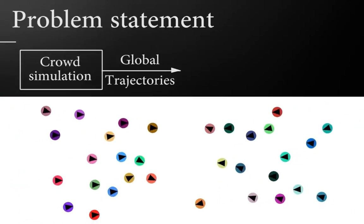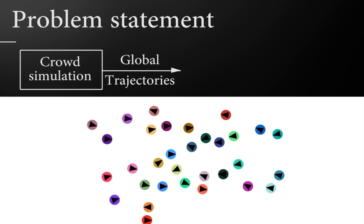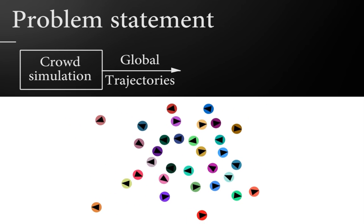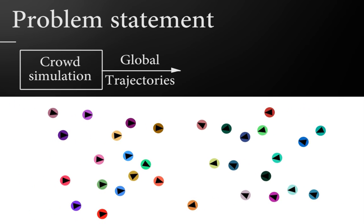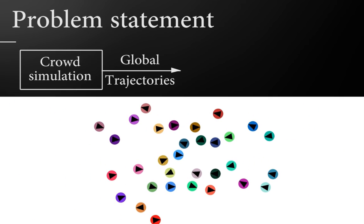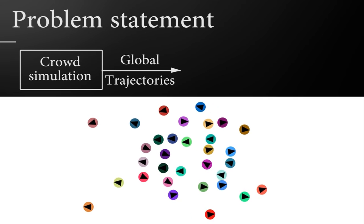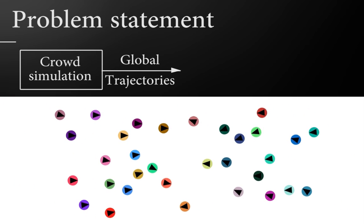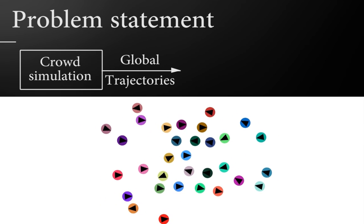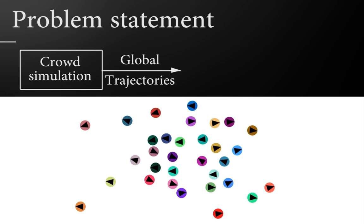Residual collisions are due to the common decomposition of a crowd animation pipeline into two independent stages. The crowd is first simulated by generating the global trajectories of the characters based on simplistic geometrical approximations such as 2D circles in this example. The trajectories are free of collisions with respect to this representation.